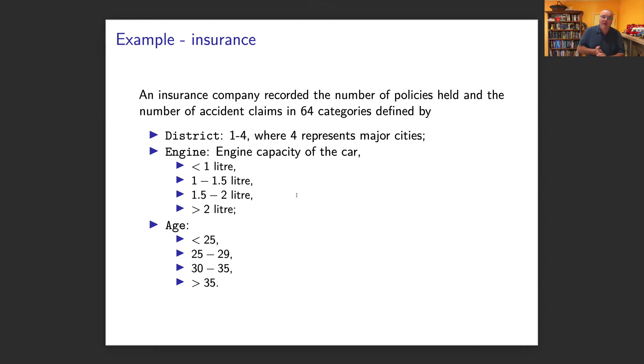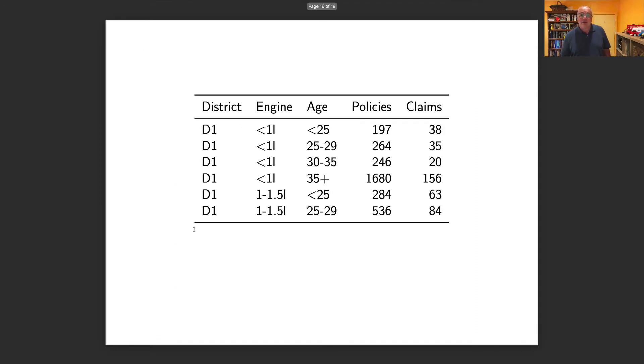So here's an example. We're looking at an insurance company, and we want to look at the number of claims that they've had. And we've got the district, the city they're in, the type of engine, the age of the driver. But of course, what we need to take into account as well, when we look at our data, is we also have the number of policies in that strata. So you can see they're not consistent. So in this one, district one, less than one litre to 35 plus, there's 1600 policies. Of course, if you're going to get claims increased, it might be just because there's more policies. And we sort of want to go, can I work out if the rate of claims is just due to the fact that there's more policies, or is it due to the fact of engine, age, and district?